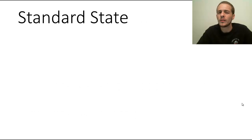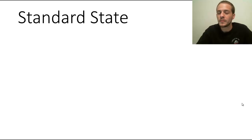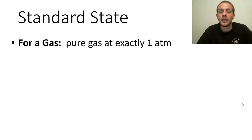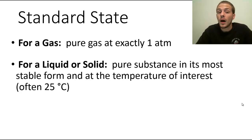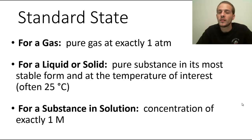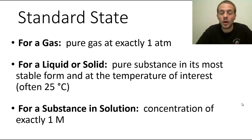So what is a standard state? The standard state of a substance depends on the state of matter in which it exists. For a gas, the standard state is a pure sample of that gas at exactly one atmosphere of pressure. For a liquid or solid, it is a pure sample in its most stable form at the temperature of interest, most commonly 25 degrees Celsius. And if a substance is dissolved in a solvent to make a solution, its standard state is when it has a concentration of exactly one molar, or one mole per liter.